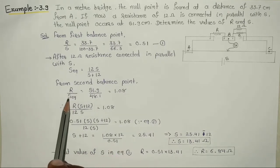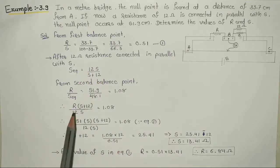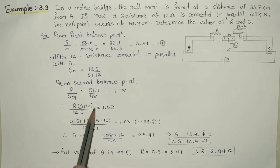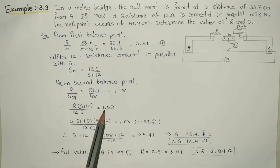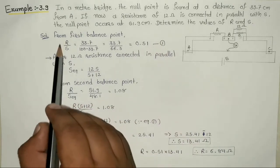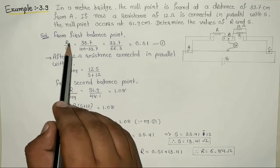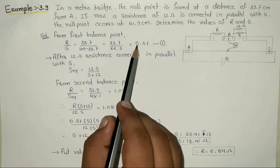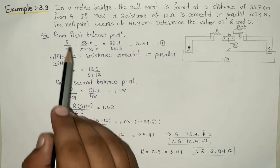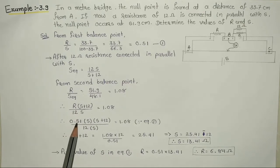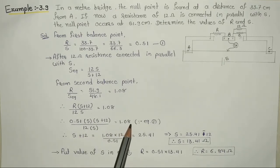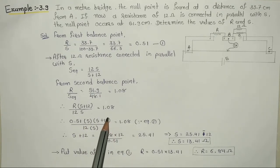अब इस equation में हम S equivalent की value रखेंगे. Equation होगा: R divided by (12S divided by S plus 12) equal to 1.08, that means R into (S plus 12) divided by 12S equal to 1.08. Equation number 1 में से R को subject बनाएं: R equal to 0.51S. यह value रखने पर: 0.51S into (S plus 12) divided by 12S equal to 1.08. Numerator and denominator में से S cancel होगा. Solve करेंगे तो S मिलेगा 13.41 ohm.